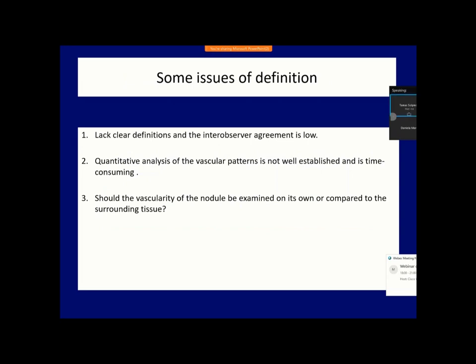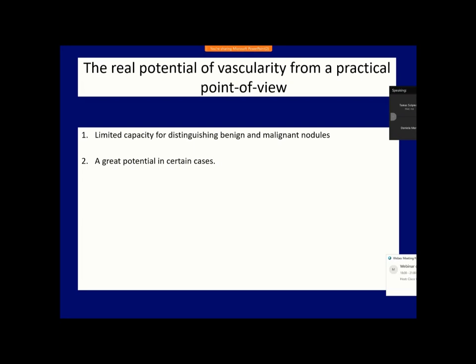We lack clear definitions and therefore inter-observer agreement is necessarily low. The visualization of vessels and blood flow depends largely on settings. It would be much more important if thyroid specialists agreed on whether to evaluate the vascularization of the nodule alone or compare it to the blood flow of the extranodular tissue. The difficulty of standardization means that each device and each investigator uses different settings. This main difficulty could be resolved if we compare nodule vascularity to the blood flow of the extra-thyroidal tissue. Tremendous efforts have been made to use vascularity for differentiating benign and malignant nodules, and essentially these efforts have failed.